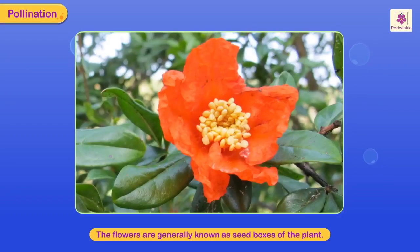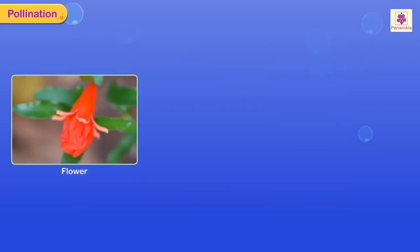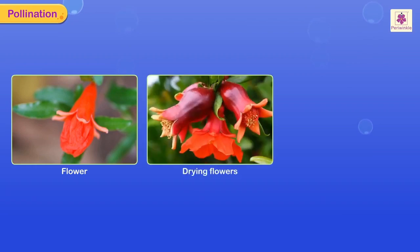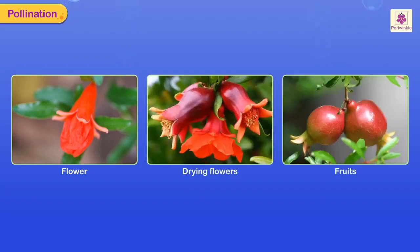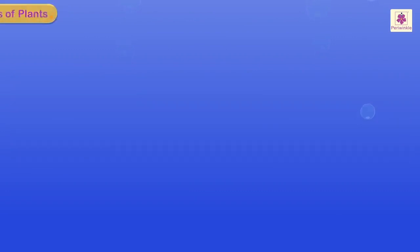The flowers are generally known as seed boxes of the plant. Usually, when the flower of a plant dries and falls off, it leaves behind the fruit.